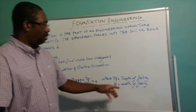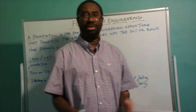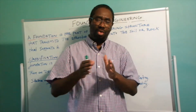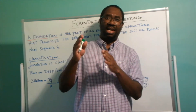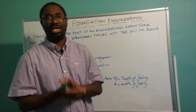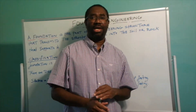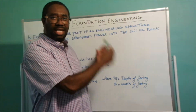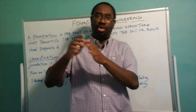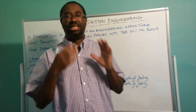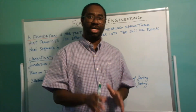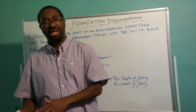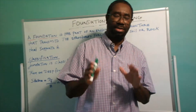B here stands for the width of the foundation. So when you divide the depth of foundation by the width of foundation, if that value is less than four, then your foundation is shallow. Conversely, if you divide the depth of foundation by the width of foundation and the result is greater than four, then you are dealing with a deep foundation. The depth-breadth ratio is what is used to determine if the foundation is shallow or deep.